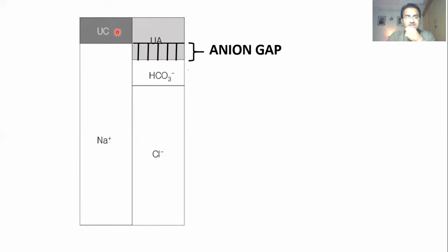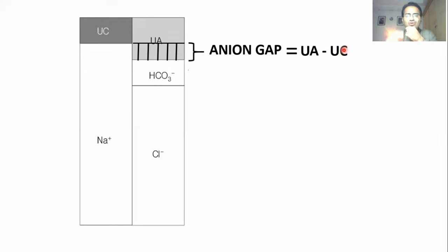How do we calculate it? If I subtract unmeasured cations from unmeasured anions, I will get this anion gap. Unmeasured anions minus unmeasured cations. But the problem is we do not have any value for these unmeasured anions and unmeasured cations.